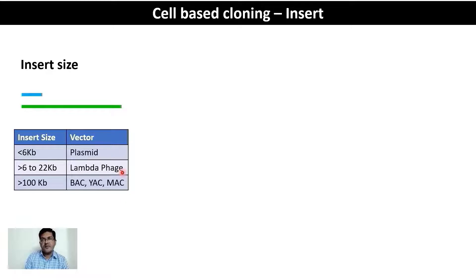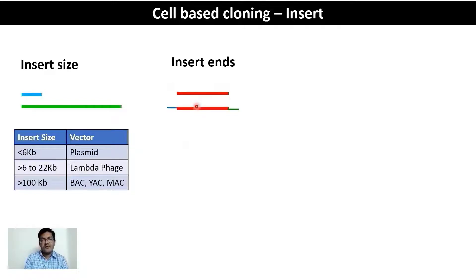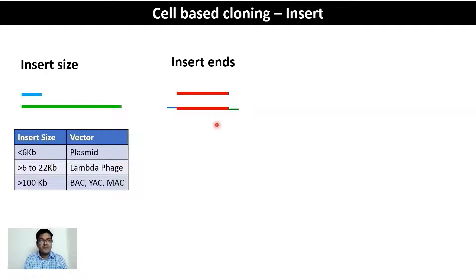Another important way inserts differ is in their ends. A blunt-end insert has no single-stranded overhangs at either end, and not all vectors are compatible with blunt-end inserts. The other type is a staggered-end insert, which has two different staggered ends, allowing for directional insertion of the DNA into the vector. Depending on the nature of the insert ends, you need to select a specific type of vector. Staggered-end inserts are preferred in cell-based cloning.